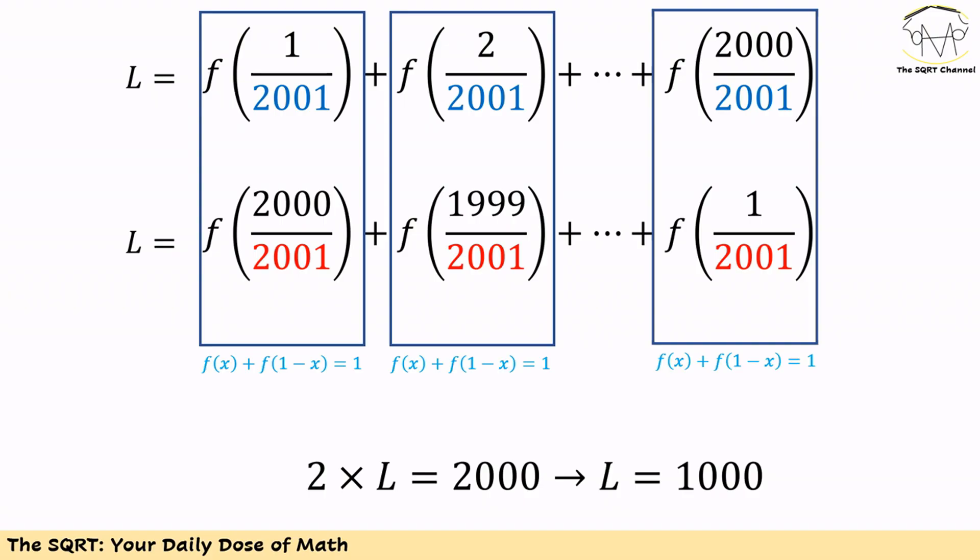So if we add everything together we get 2000 times 1, which equals 2 times the expression we need to calculate. Therefore the expression we need to calculate is equal to 1000, and that's our final answer.